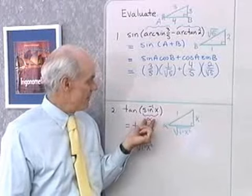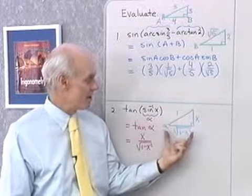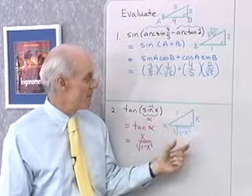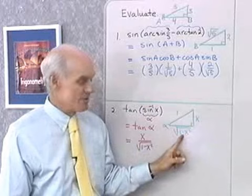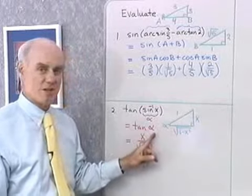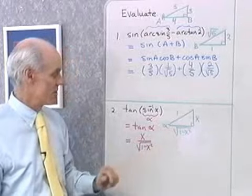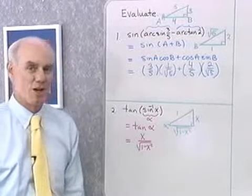If alpha is an angle in the first quadrant and is equal to inverse sine x, I can draw this little diagram right here. I see that this side is filled in by the Pythagorean theorem. I go back and see what I'm looking for, tangent of alpha, and it's very easy to fill in here, opposite over adjacent, and so I have this expression. Let's look at one more problem.